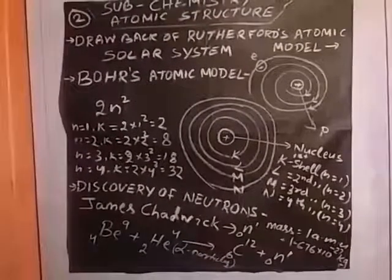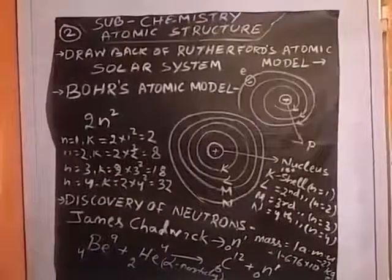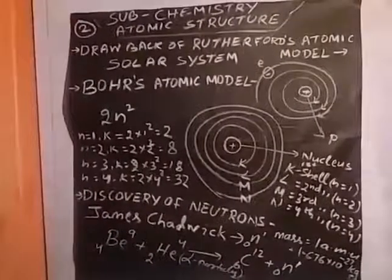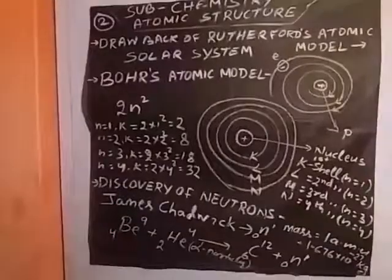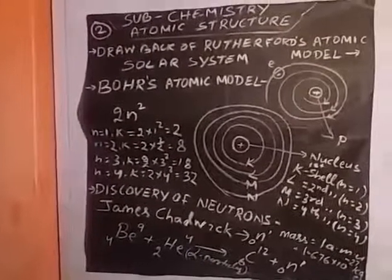That is known as electronic configuration. These electrons are settled according to their orbit or shell or path. Then discovery of neutrons. In the central part there is a positive charge, that means protons.